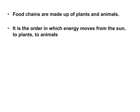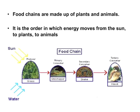Food chains are made up of plants, which are producers, and animals. It is the order in which energy moves from the sun to plants to animals.